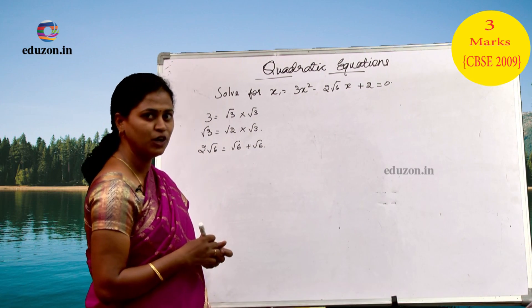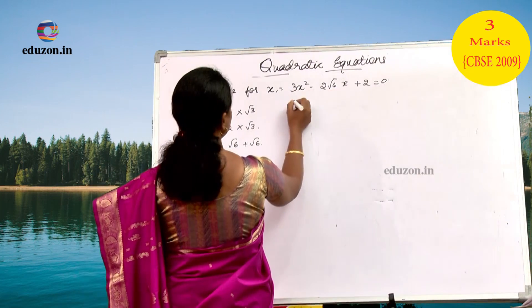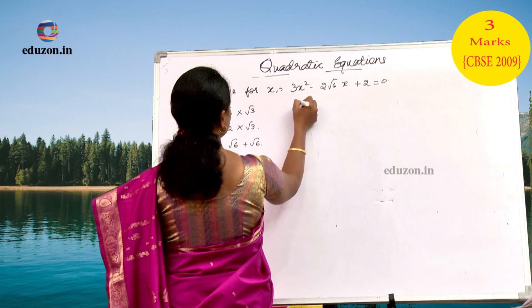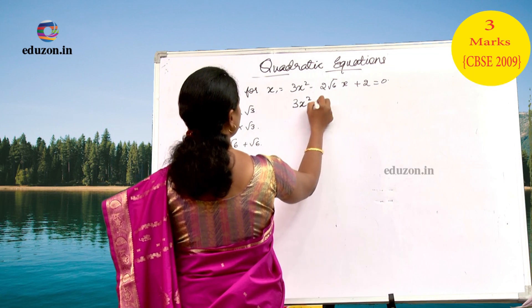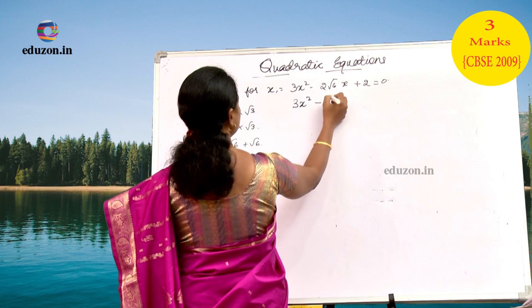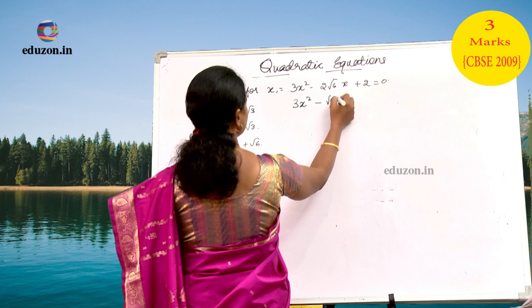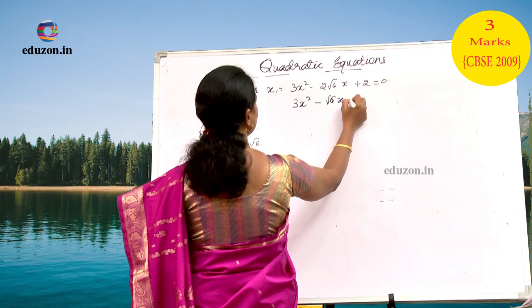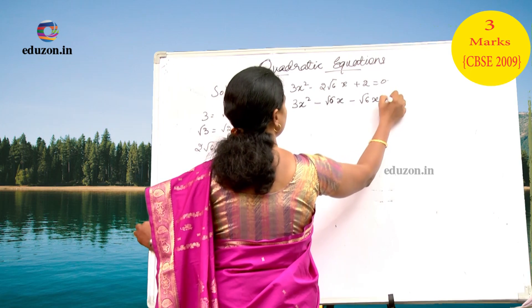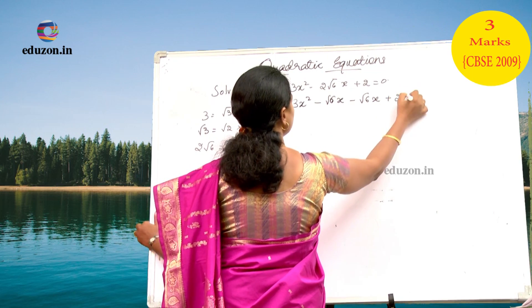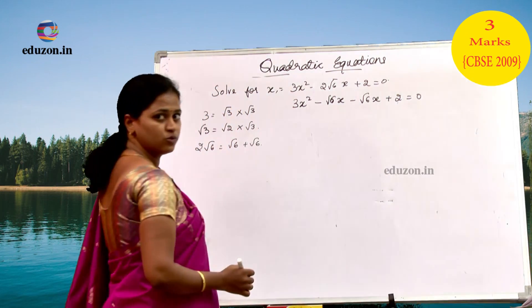Now you have the idea how to solve it. So, this we can write it down as 3x squared minus root 6 times x minus root 6 times x plus 2 is equal to 0.